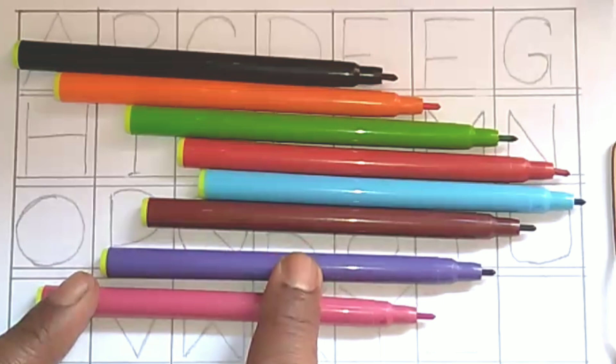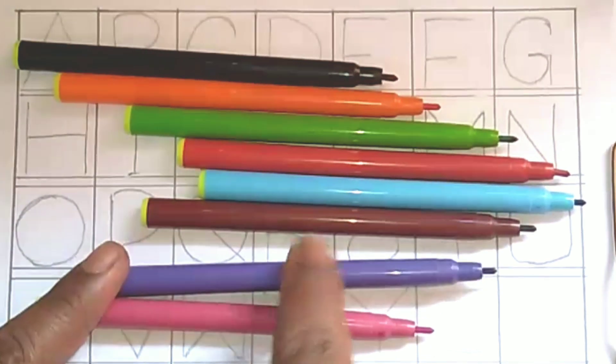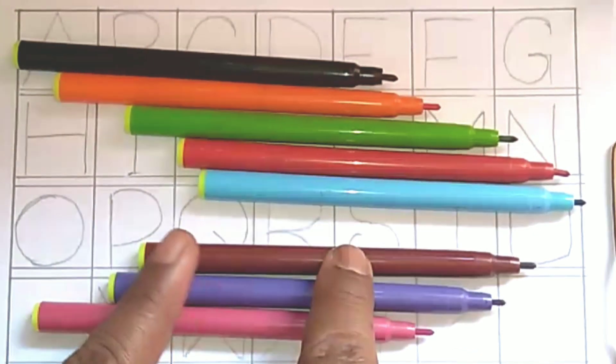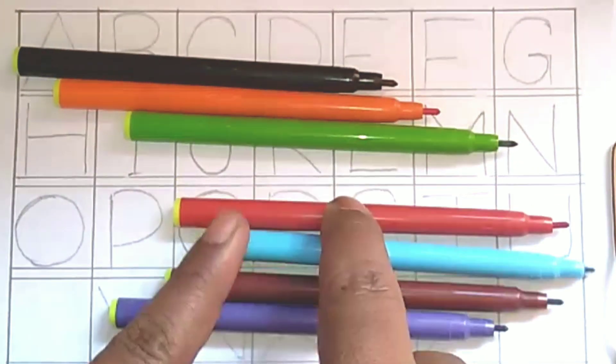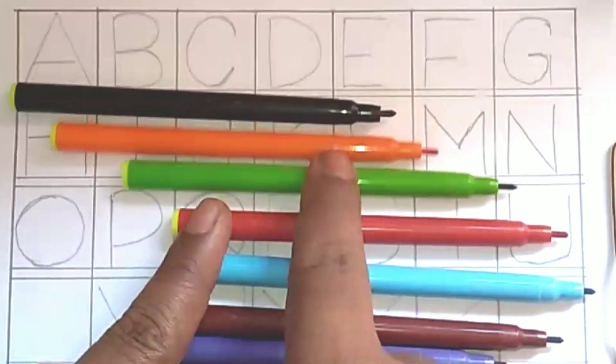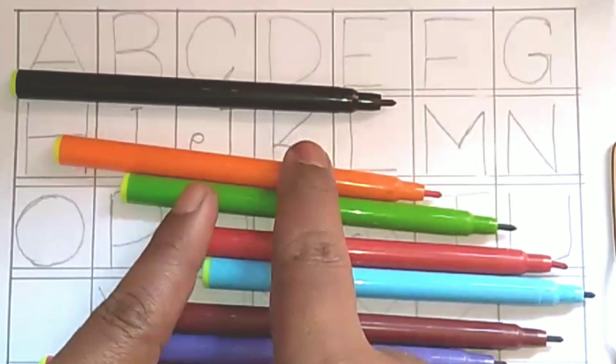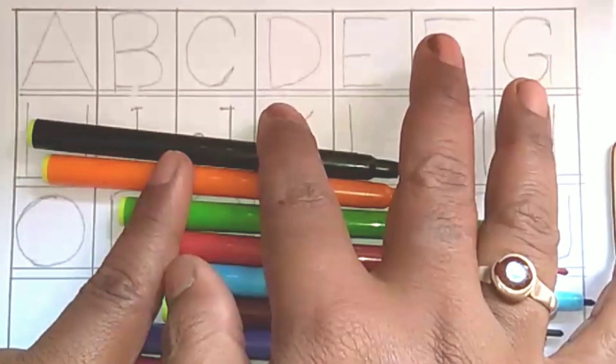This is pink color, violet color, chocolate color, blue color, red color, green color, orange color, black color.